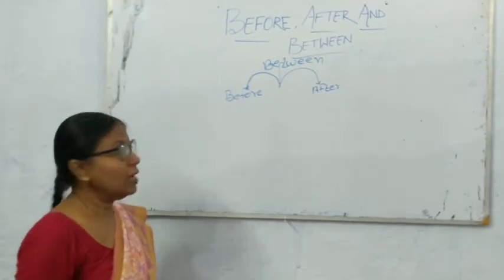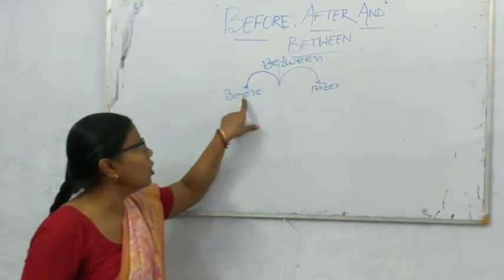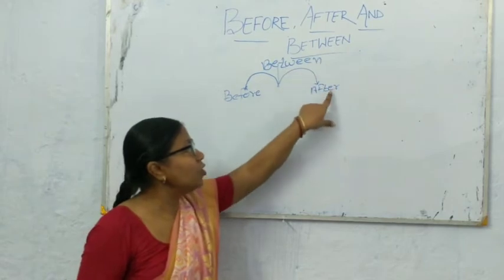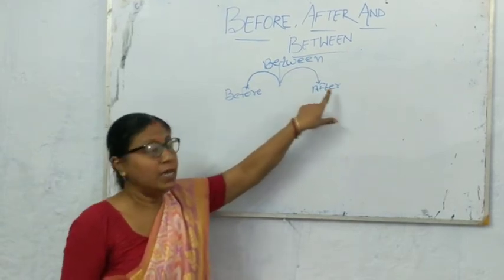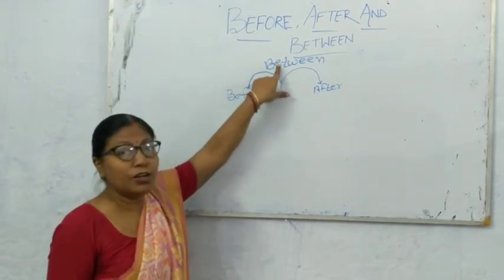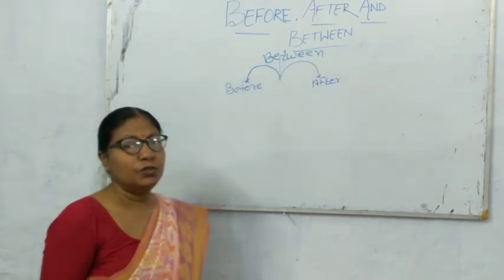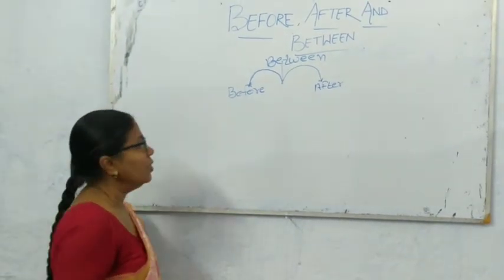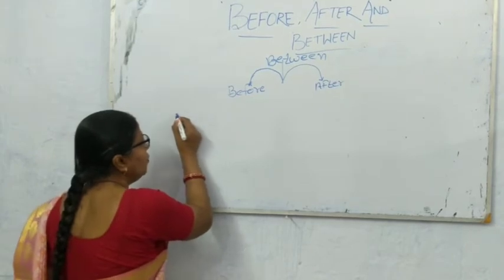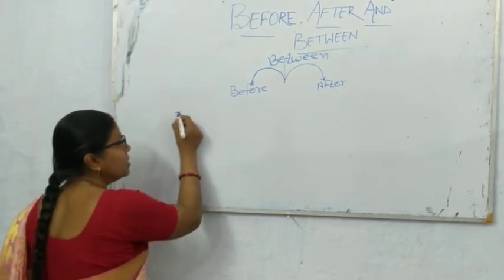Okay children, the left side of the dot is before, the right side of the dot is after, and the main dot is between. To make it easy, we will make a numbered string.